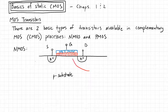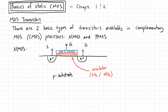The insulator in older processes typically tended to be silicon dioxide. Now it's some sort of hafnium dioxide or something like this — some sort of high-K material.